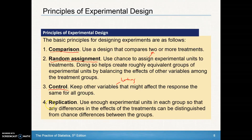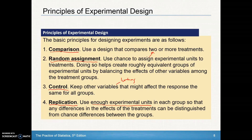And number four, you must have replication. You've got to use enough experimental units in each group so that any difference in the effects of the treatments can be distinguished from chance differences between the groups. When you're assigning experimental units to the different treatment groups, just make sure you have enough of them. A small number could produce differences based purely on having two wildly different people in a group. So the more, the better.